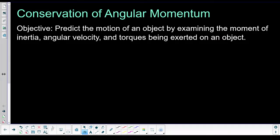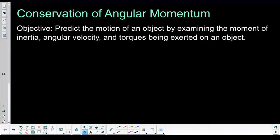But we're gonna talk about the conservation of angular momentum. We've learned regular momentum, regular forces, spinning stuff, spinning forces, and spinning masses. Now we're learning spinning momentum. So we're almost at the end. We're gonna talk specifically about conservation of angular momentum.